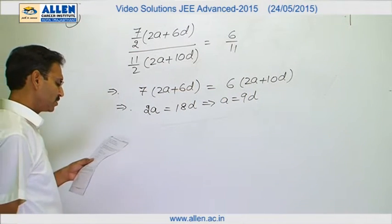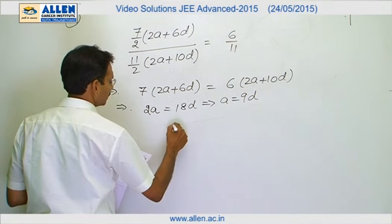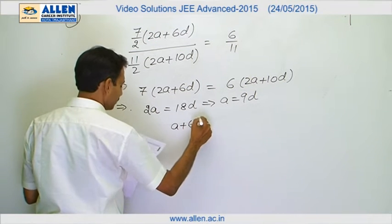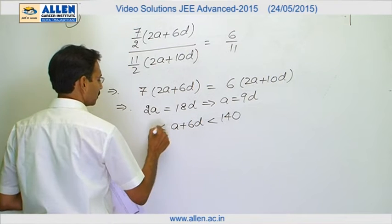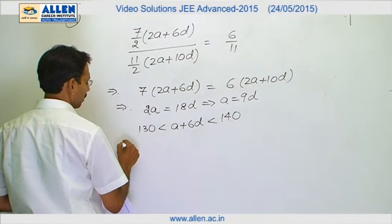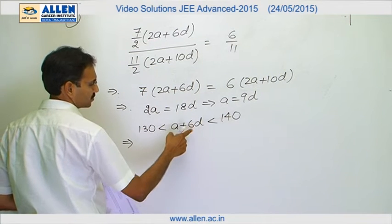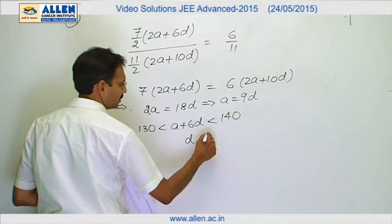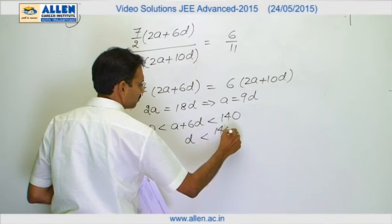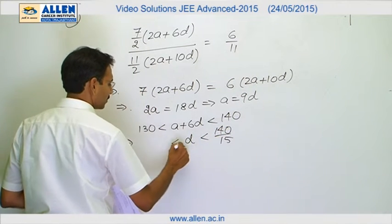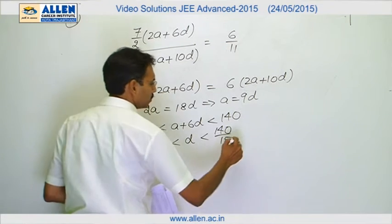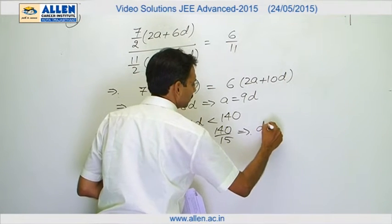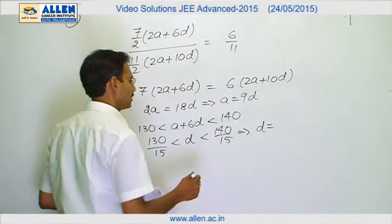One more information is about the 7th term, that the 7th term is lying between 130 and 140. I will replace a by 9d, this gives us 15d. So d is less than 140 by 15 and greater than 130 by 15. This leads to only one integral value of d and that is 9.